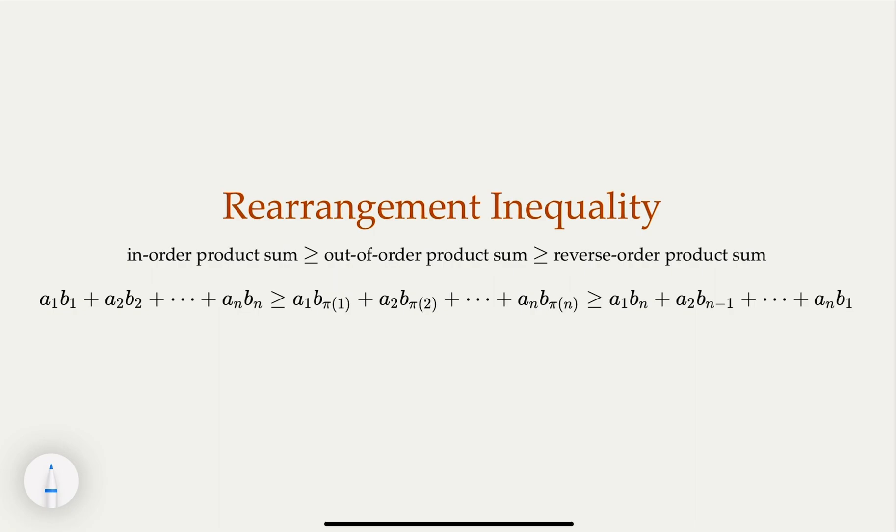If you have not watched the previous videos, I suggest that you go watch them. In summary, if we are given two sequences in the same either increasing or decreasing order, then the product sum has a property that the in-order product sum is maximum, reverse order is minimum, and out-of-order one is in-between. That's the main result.